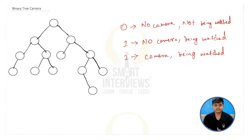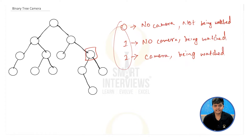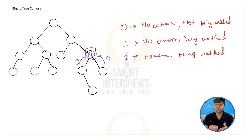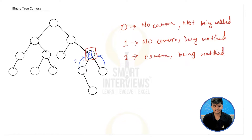Now how do we use these three types? Each node can be one of these three types, and we determine which type it is by looking at its child nodes. If any one child node is type 0 — meaning it has no camera and is not being watched — then we must place a camera in the current node, making it type 2. If one child is type 2, meaning there's a camera there, then the current node is already being watched, so it should be type 1.